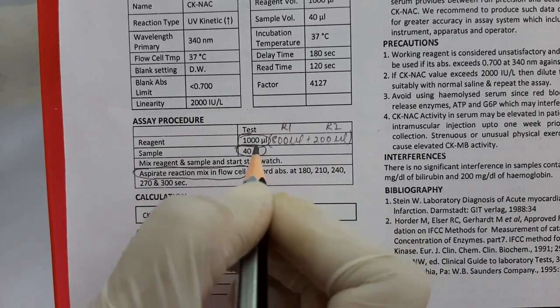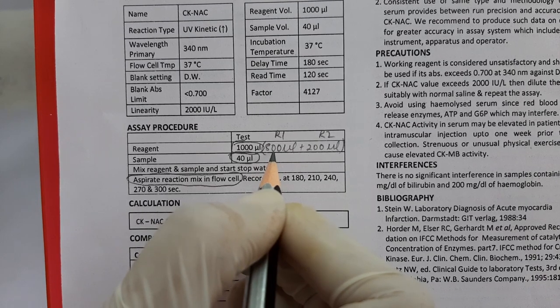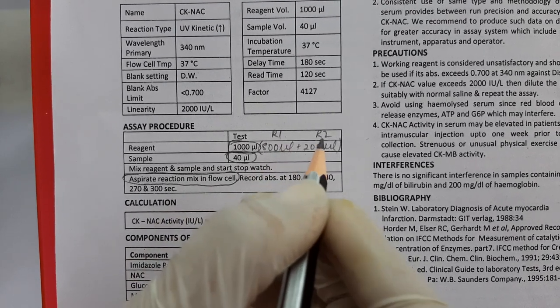To prepare 1000 microliters of working solution, we need to add 800 microliters of R1 and 200 microliters of R2.